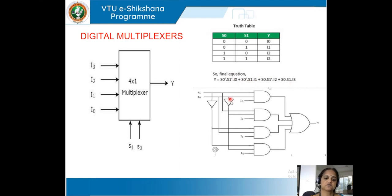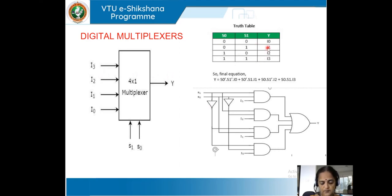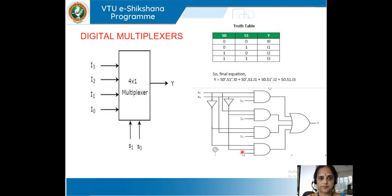Once we derive this equation, we need to draw the logical diagram. This is the standard process for all combination logic circuitry: identify inputs and outputs, find the relationship between them, write the truth table, write equations based on the truth table, simplify using K-map or Boolean expressions, and then draw the logic diagram. A digital multiplexer follows the same procedure.